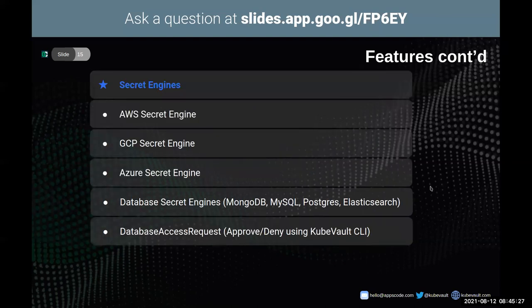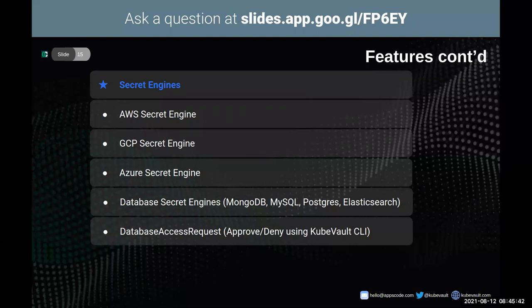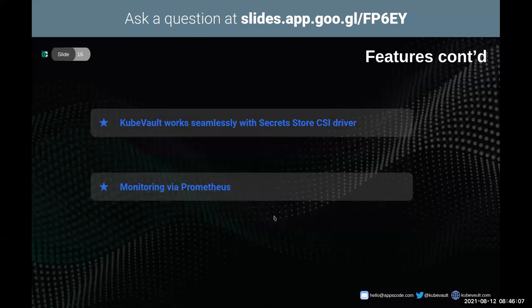KubeVault also helps you manage secret engines. You can create AWS secret engine, GCP secret engine, Azure secret engine, and database secret engines. Currently supported database secret engines are MongoDB, MySQL, Postgres, and Elasticsearch. During the demo, we'll look at the database secret engine for Elasticsearch using KubeVault. A user can make a database access request and the admin can approve or deny it using the KubeVault CLI. KubeVault also works seamlessly with the SecretStore CSI driver discussed earlier, and provides monitoring via Prometheus.